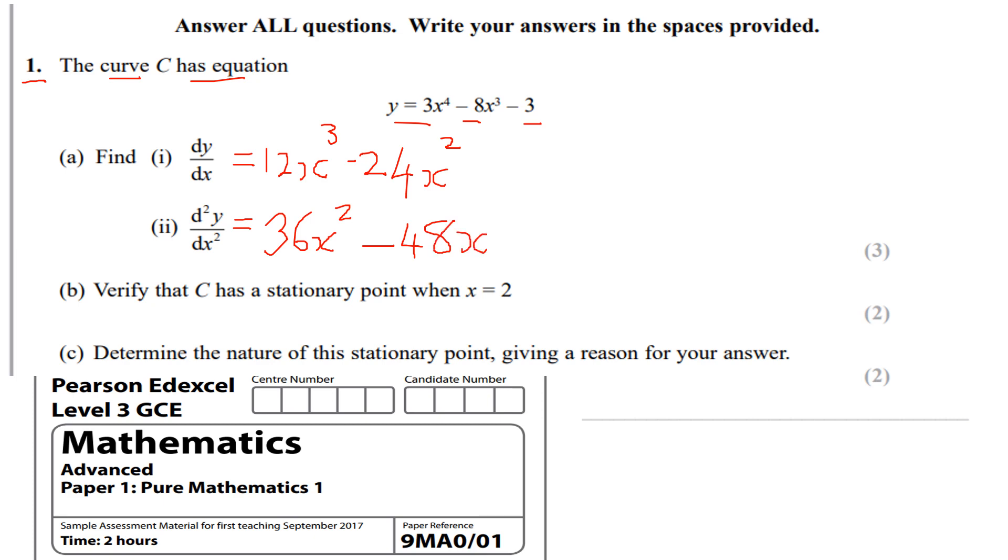Part B, verify that C has a stationary point when x equals 2. We sub in x equals 2 into dy/dx, making sure that it's equal to 0. So we're going to have 12 lots of 2 cubed, and then subtract 24 lots of 2 squared. 2 cubed is 8. 8 times 12 is going to be 96, if I'm not mistaken. And then 2 squared equals 4, 4 times 24 is going to be 96. We have 96 minus 96, so equal to 0.